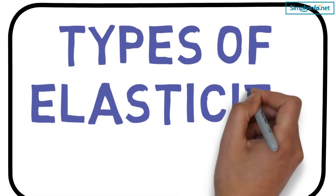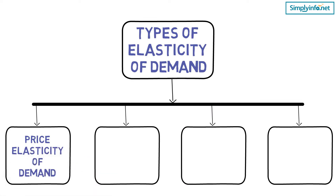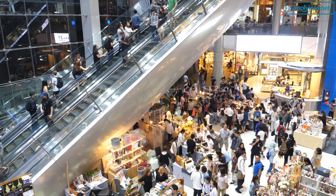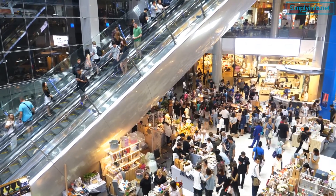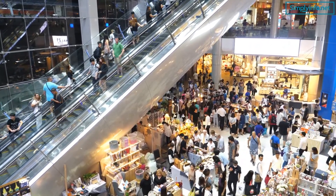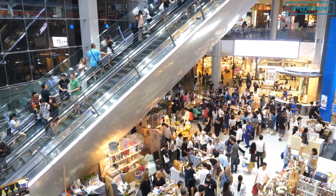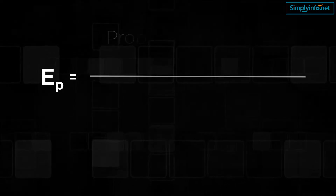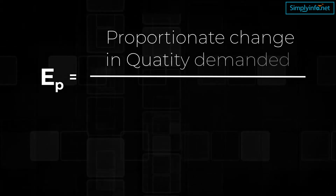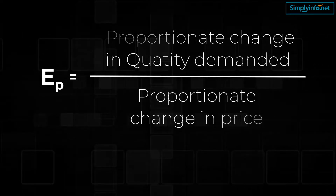What are the types of elasticity of demand? Number 1: Price elasticity of demand. Price elasticity of demand, commonly known as elasticity of demand, refers to the responsiveness and sensitiveness of demand for a product to the change in its price. The price elasticity of demand is: Ep = proportionate change in quantity demanded divided by proportionate change in price.